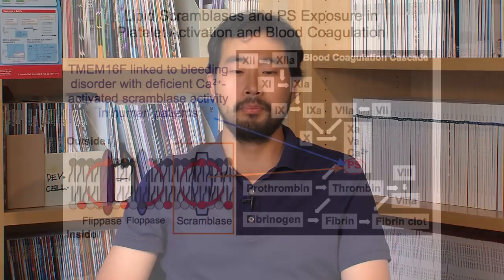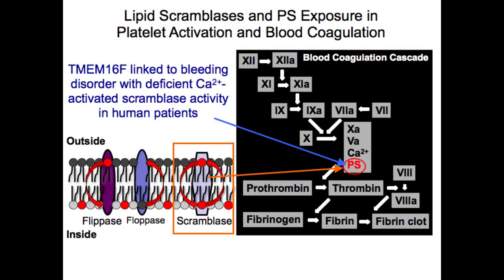A recent study found that Scott syndrome patients have defective TMEM16F gene expression and linked TMEM16F with membrane lipid scrambling. In most healthy cells, lipid translocators such as flippases and floppases work together to maintain an asymmetric lipid bilayer such that phosphatidylcholine and sphingomyelin are found on the outer leaflet and phosphatidylserine and phosphatidylethanolamine at the inner leaflet. This asymmetry is disrupted by another lipid translocator called scramblase, which jumbles the bilayer in a calcium-dependent manner. The resulting phosphatidylserine, or PS exposure, is crucial in the blood coagulation cascade by providing a suitable cell surface for coagulation factors 10 and 5 that form a protein complex that converts prothrombin to thrombin.